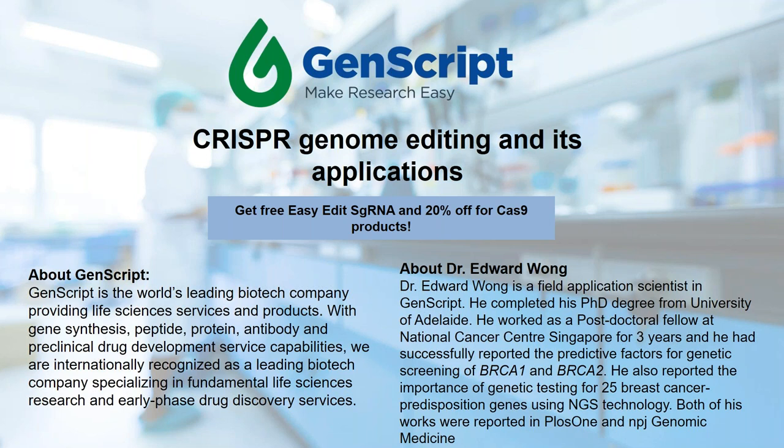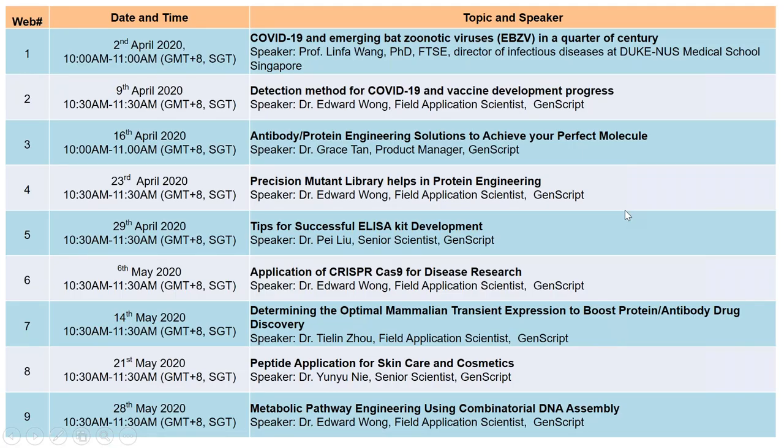This webinar will take around 45 minutes. If you have any questions, feel free to type in the question field on your screen — we'll answer them after the presentation. If we didn't get to your questions during the Q&A session, we'll email you back. This webinar will be recorded and available on our webpage after today. We're currently running a CRISPR promotion where all attendees can get a free sgRNA and 20% off Cas9 products. The promo code will be sent via email after the webinar.